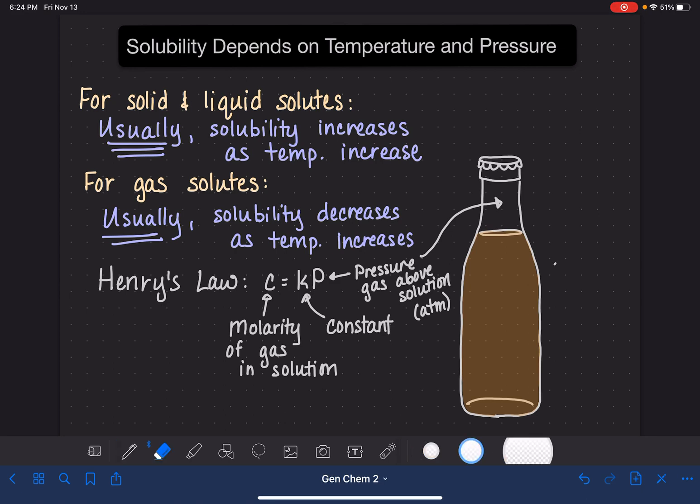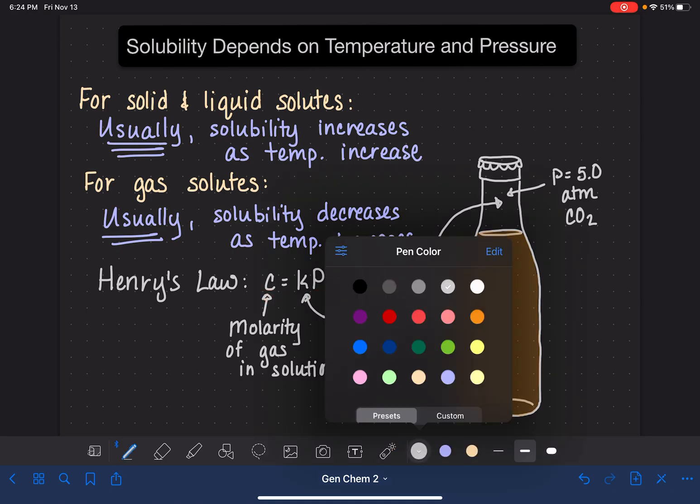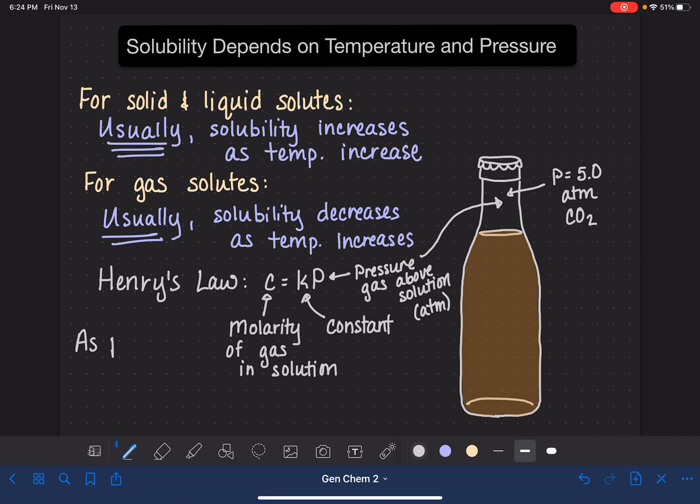When we bottle soda up, it's typically bottled under a pressure of five atmospheres. That's very high pressure, five atmospheres of CO2. This high pressure of carbon dioxide gas up above the surface of the solution increases the solubility of the gases in the solution. Because we see this direct relationship in Henry's law, direct relationship between molarity and pressure. As pressure increases, the solubility increases as well.